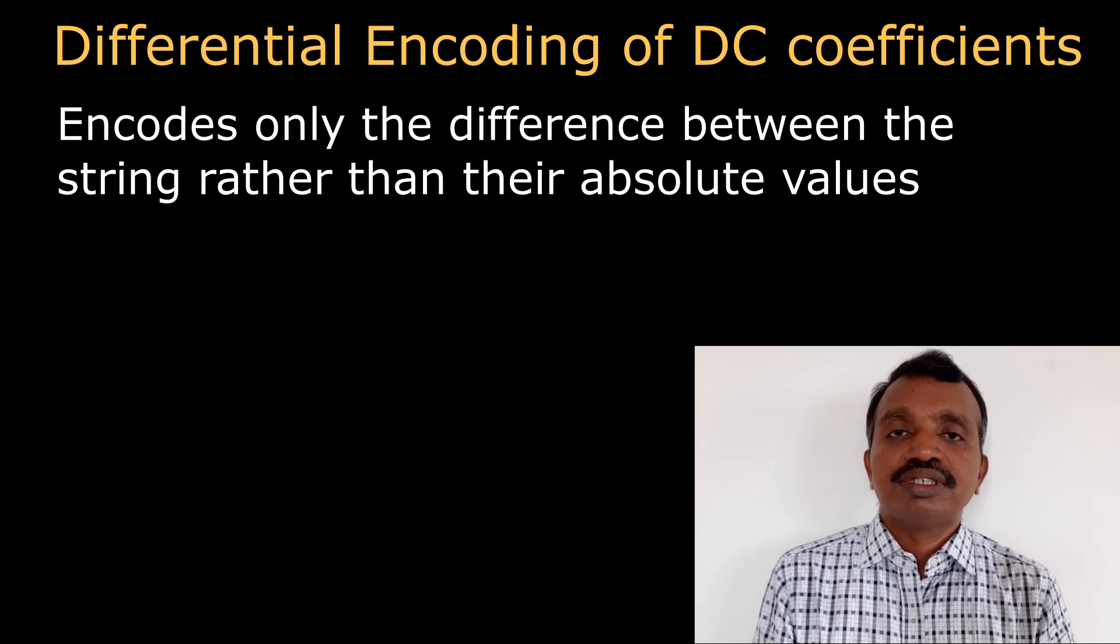In order to encode the DC coefficient, you have to find the difference between the DC coefficient of the present block and the DC coefficient of the previous block. When the DC coefficient of the previous block is not given, then you can assume it as 0.